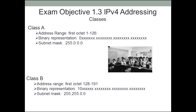Class B addresses fall within the address range of 128 to 191. In their binary representation, the first digit is always a 1 and the next digit is always a 0. Their subnet mask is 255.255.0.0. That means you had 2 to the 16th power networks available, and each of those networks had 2 to the 16th power minus 2 nodes available. If you get into advanced addressing schemes, that will become more apparent, and Network+ does cover that.